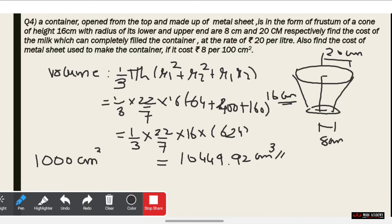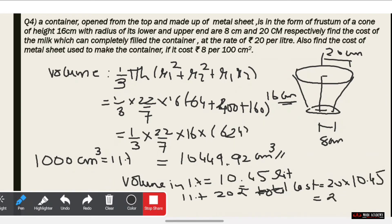We know that 1000 cm³ equals 1 liter. So our volume in liters equals 10,449.92 divided by 1000, which gives us 10.45 liters. Now, 1 liter costs 20 rupees, so 10.45 liters will cost 20 × 10.45, which equals approximately 209 rupees.